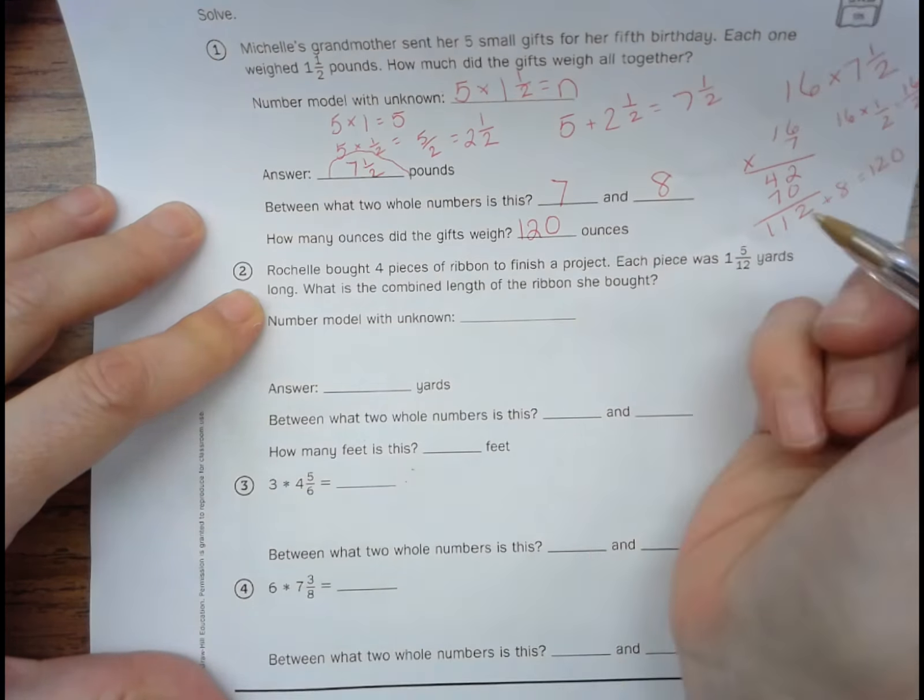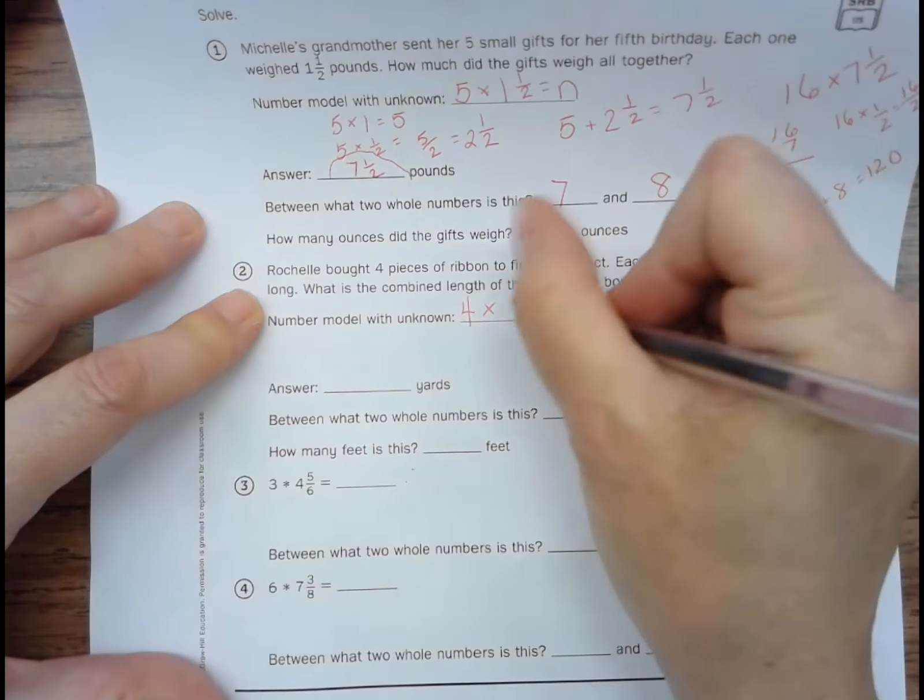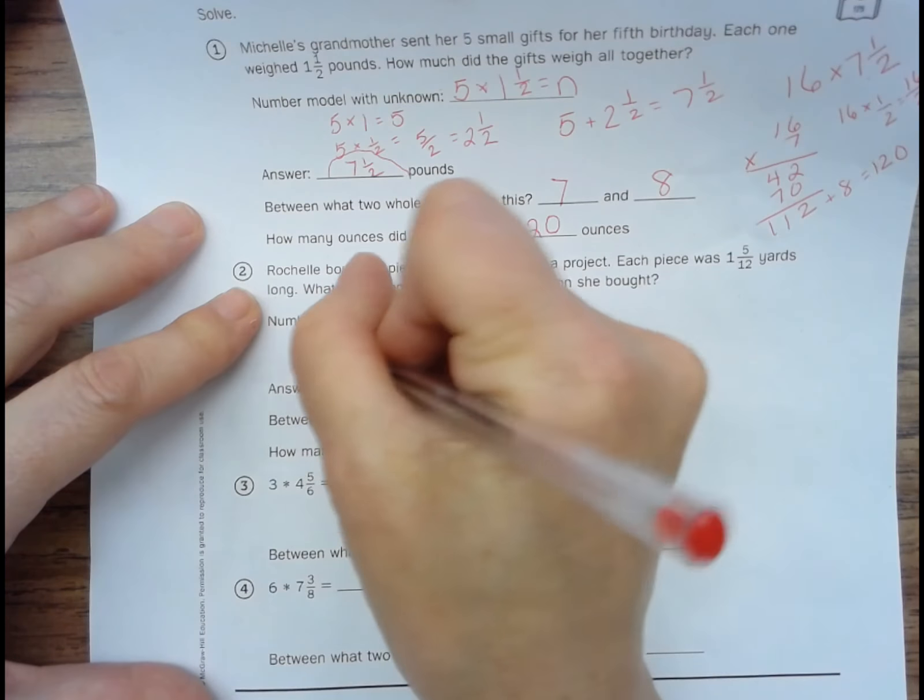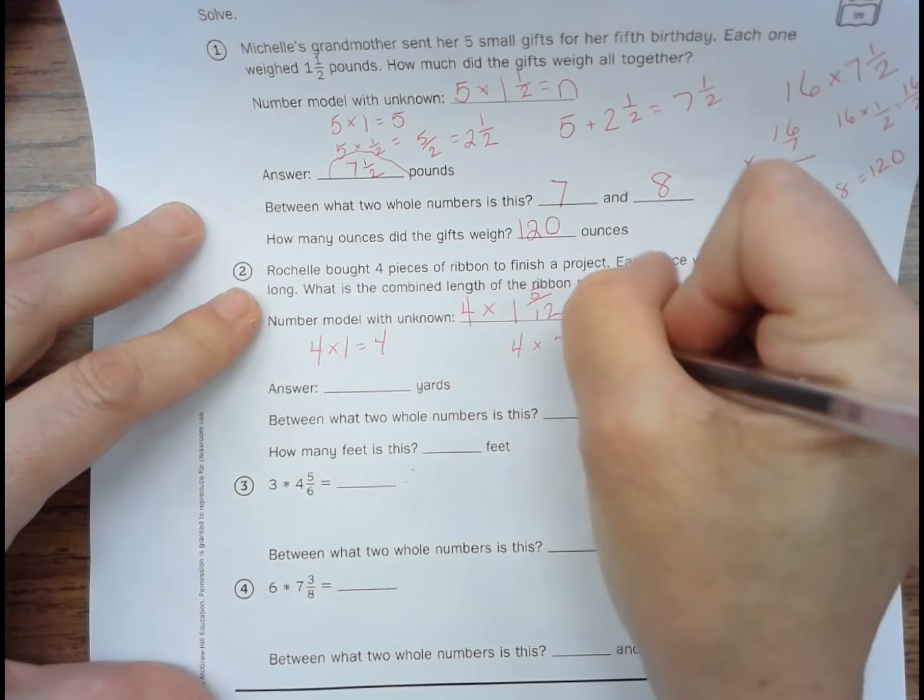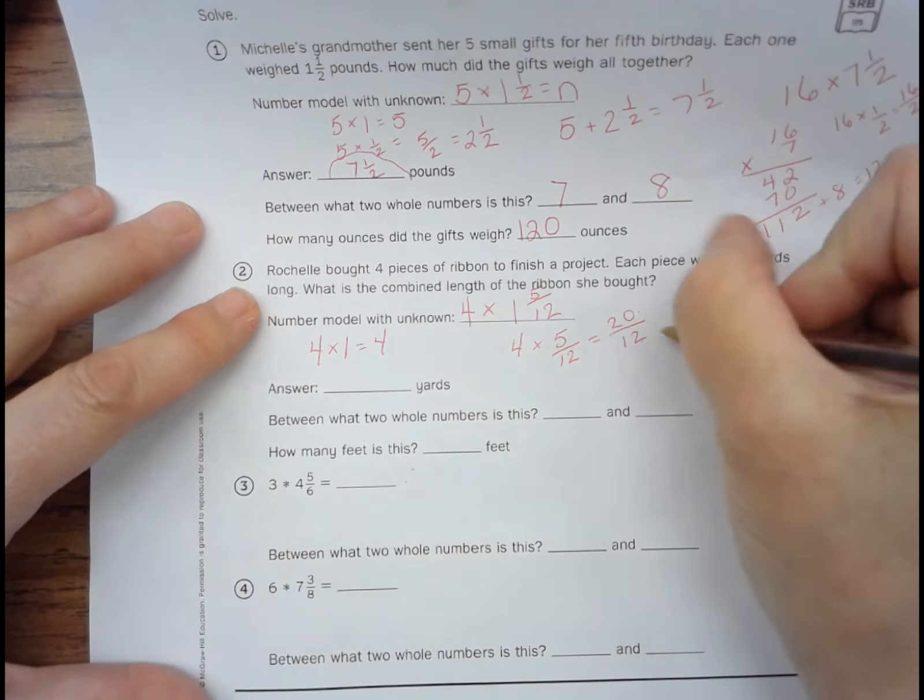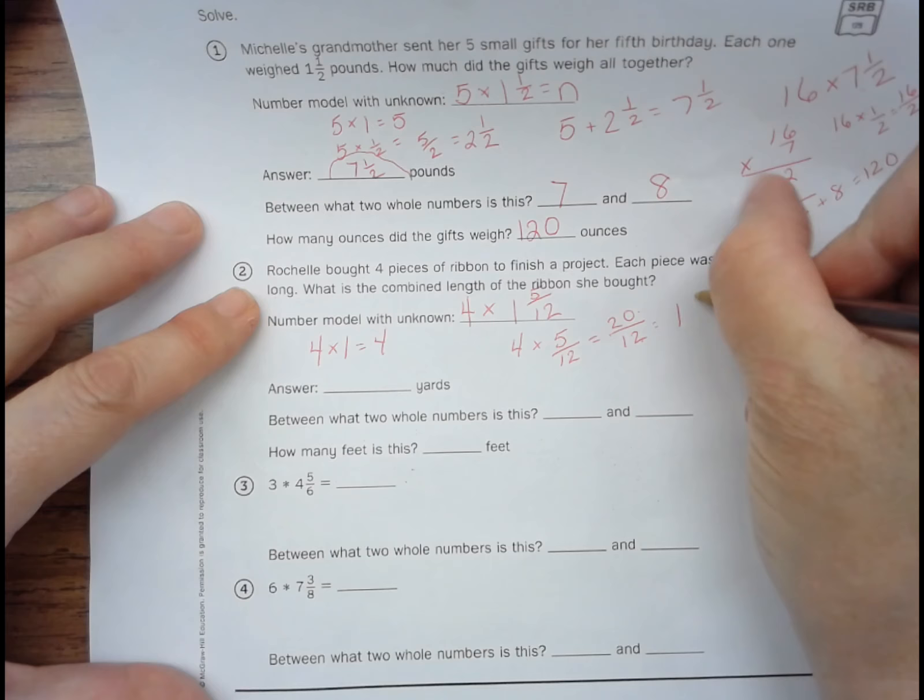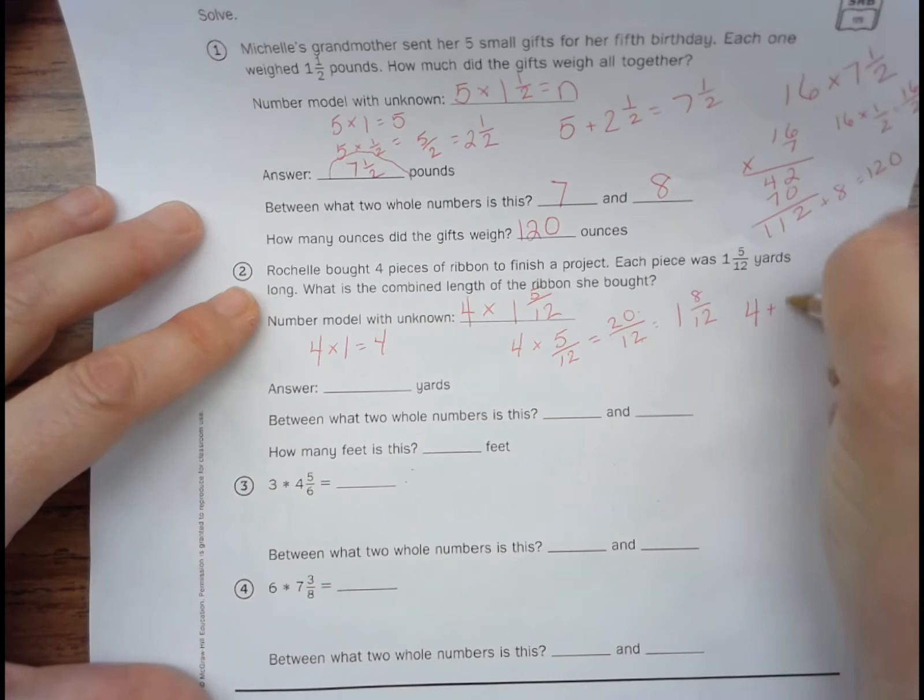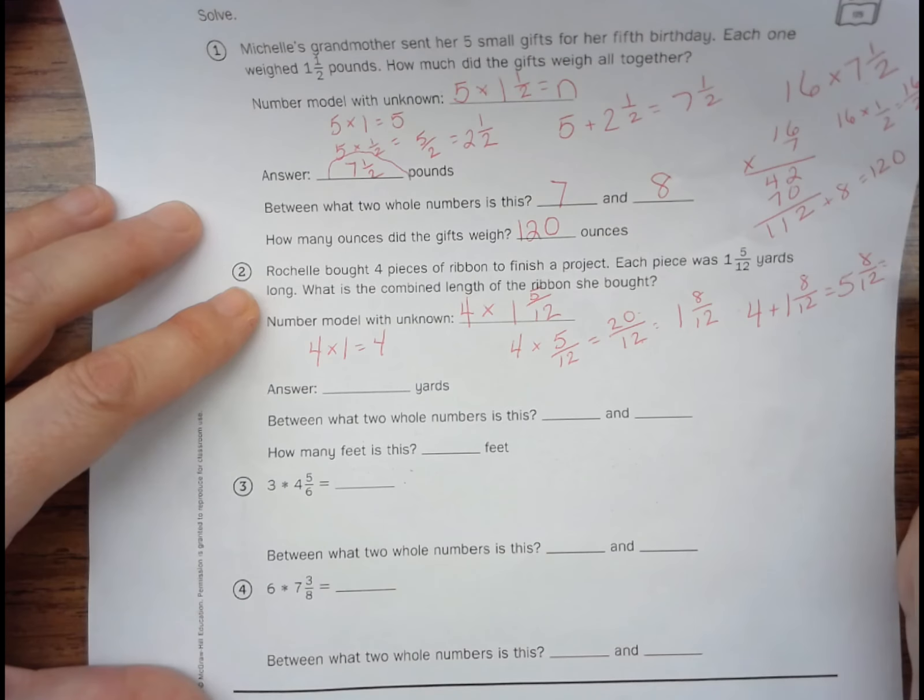So the number model with the unknown is going to be four times one and five twelfths. Four times one is four. Four times five twelfths equals 20 twelfths. 12 goes into 20 one time with a remainder of eight. And then four plus one and eight twelfths equals five and eight twelfths. And you can simplify that fraction. Because eight twelfths has a common factor of four. So eight divided by four is two. Twelve divided by four is three. So it's going to be five and two-thirds.